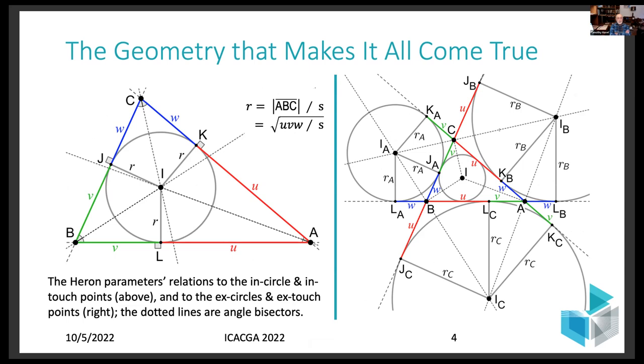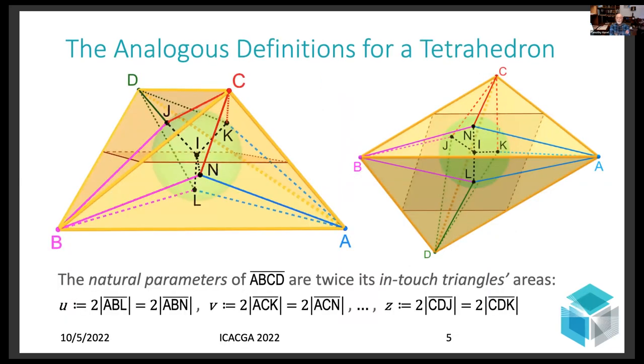First, before we get on to the generalization, let's look at the geometry that makes it all come true. The Heron parameters are nothing more or less than the distances from the vertices of the triangle to what are known as the in-touch points, at which the in-circle of the triangle touches its edges. They are also equal to the distances from the vertices of the triangle to the ex-touch points, at which the three ex-circles touch either its edges or the lines expanded by those edges, which is shown on the right-hand figure there. And it's that intimate connection to the geometry of the in-circle and ex-circles that provides the clue by which I was able to extend Heron's formula.